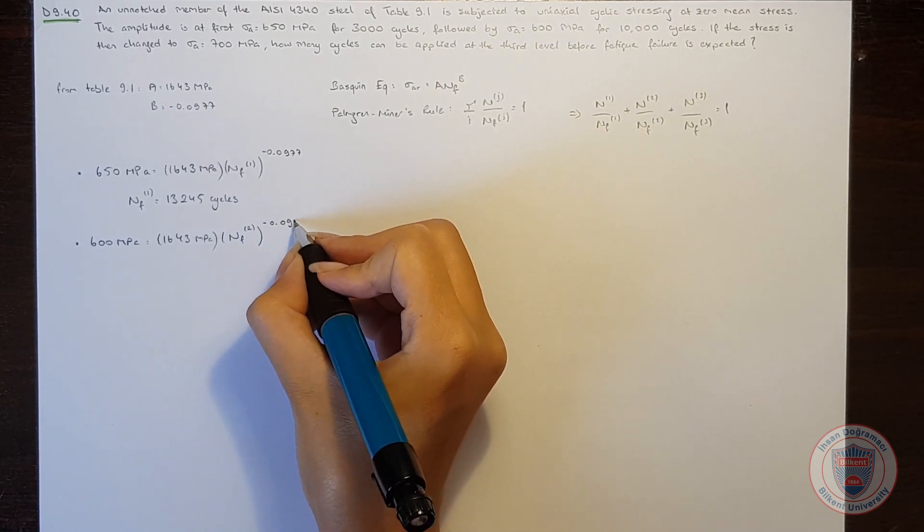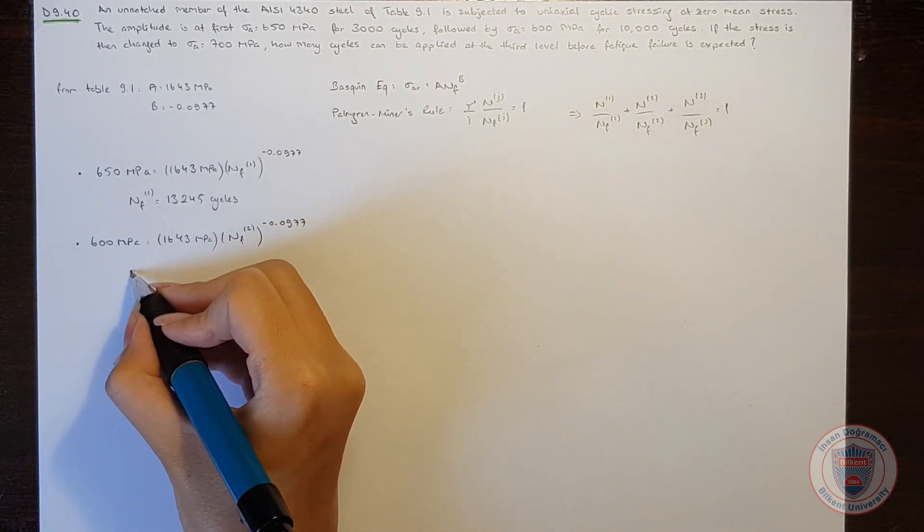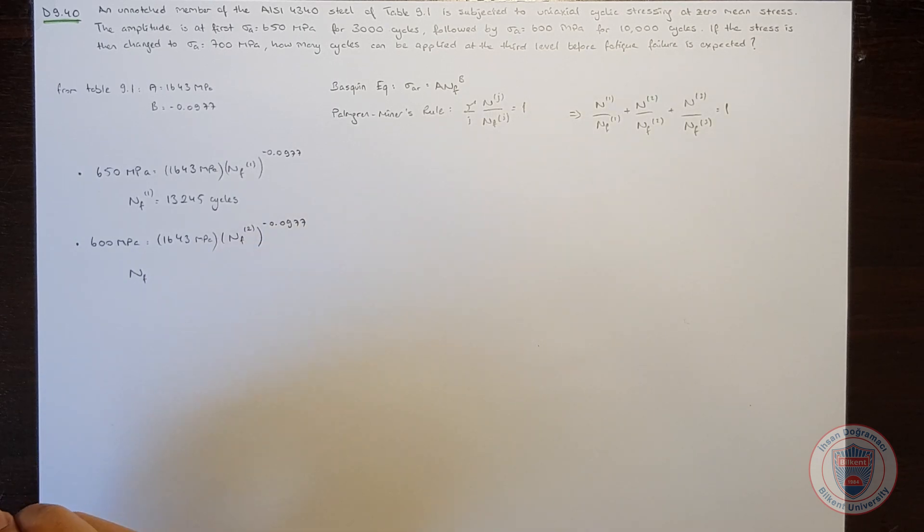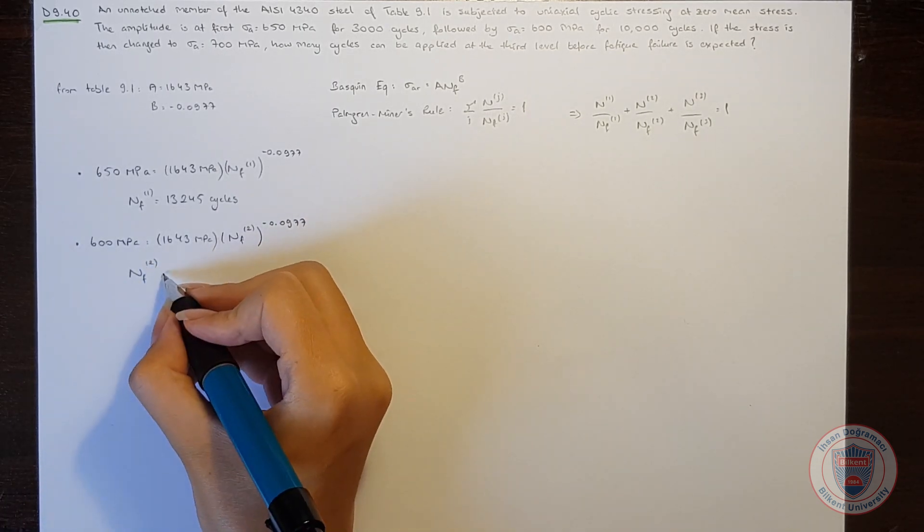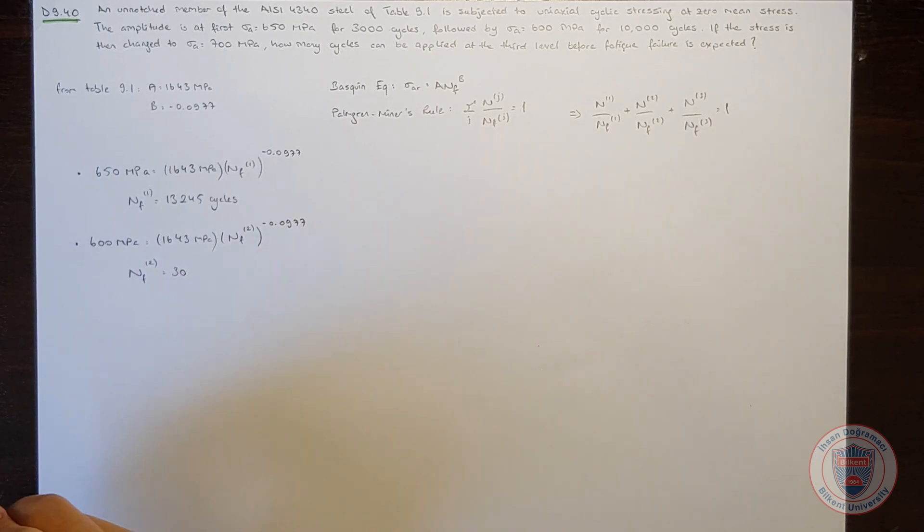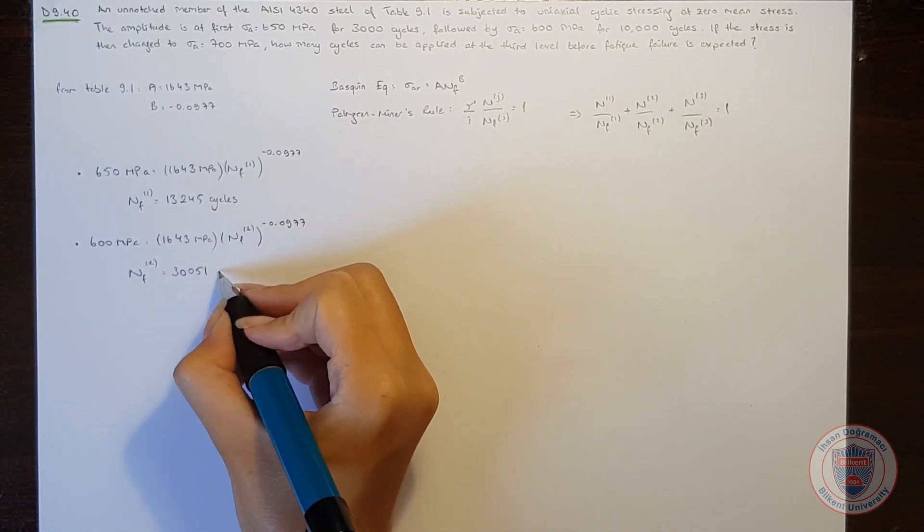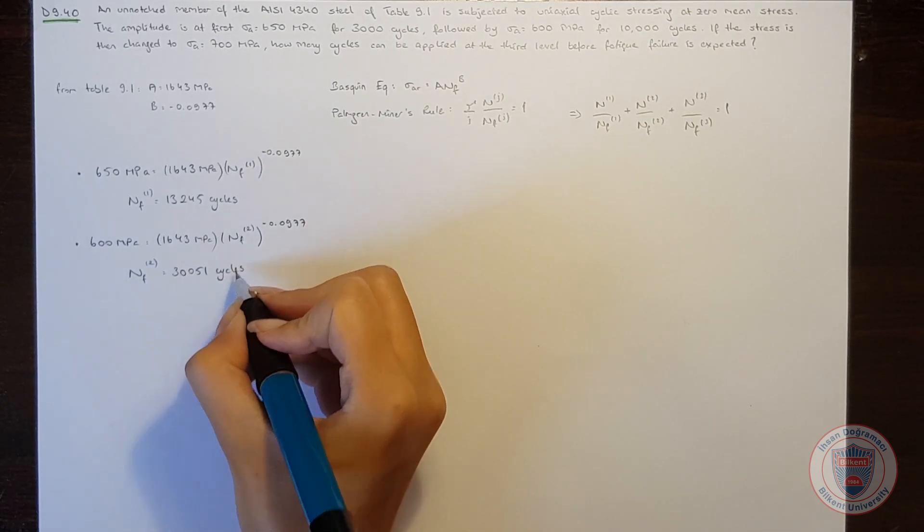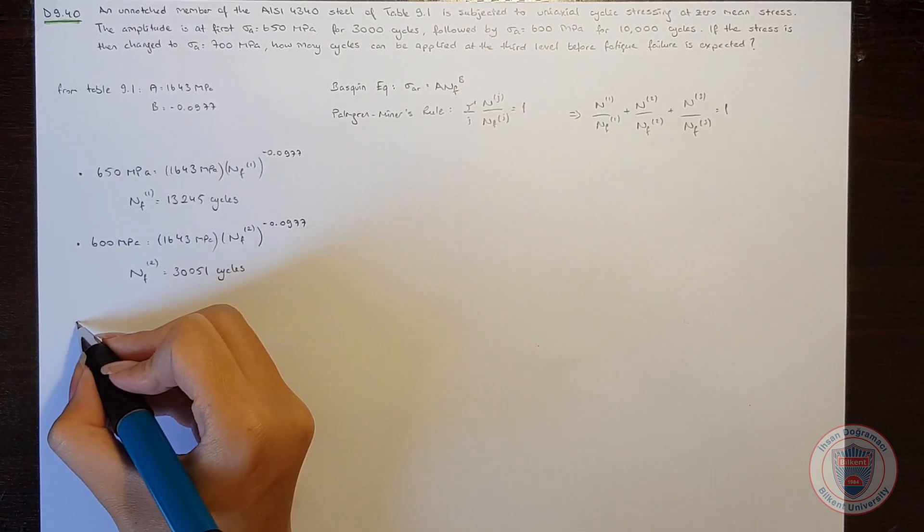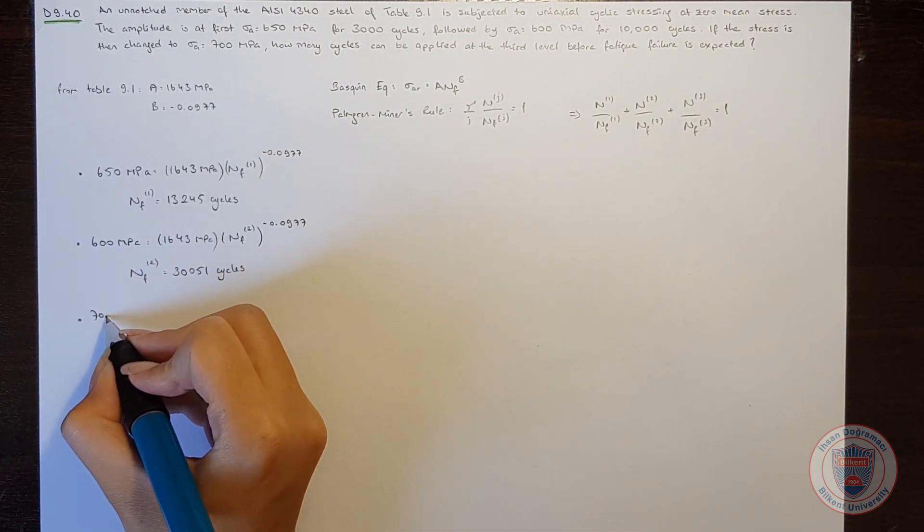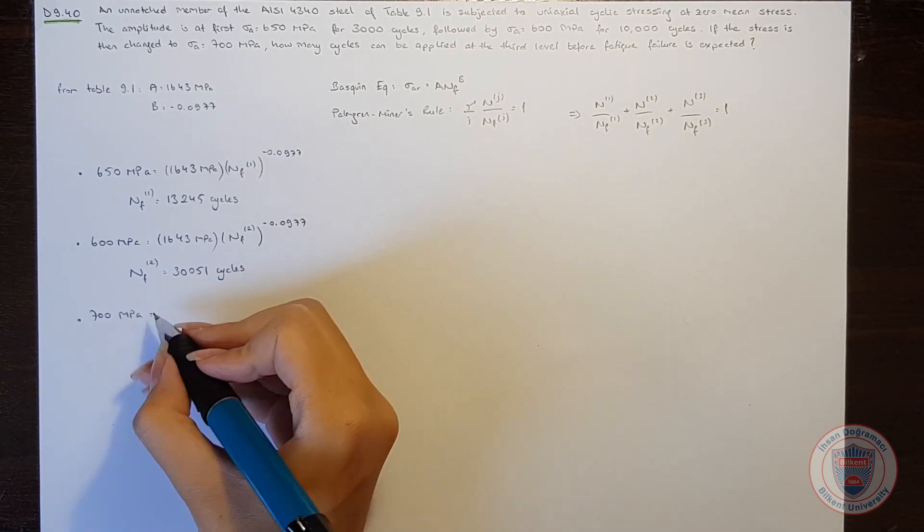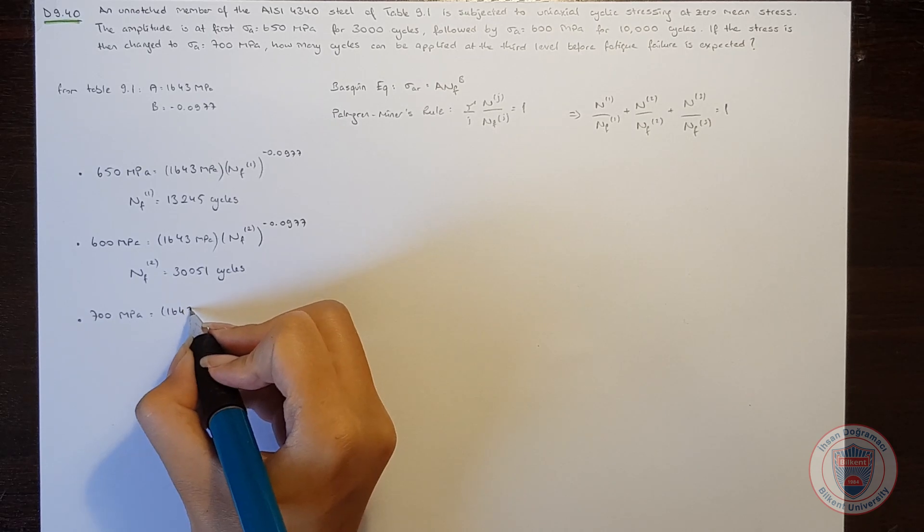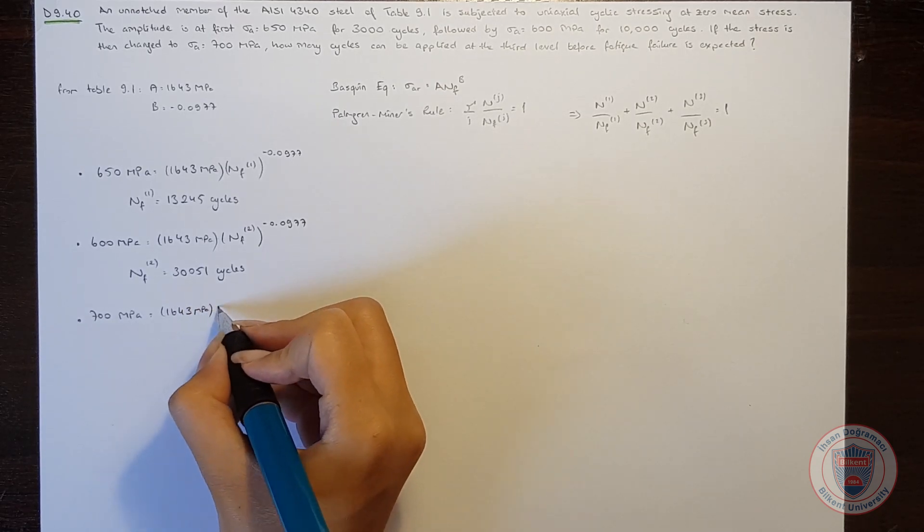And then we will get the fatigue life at the second level as 30,051 cycles.